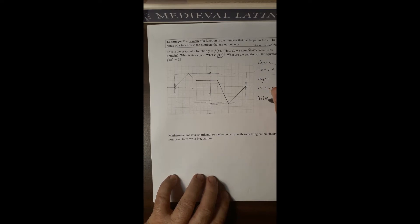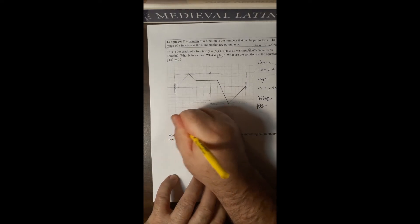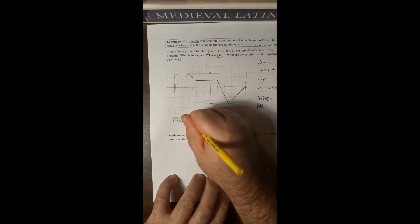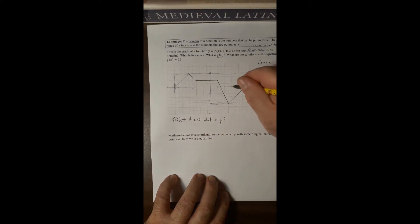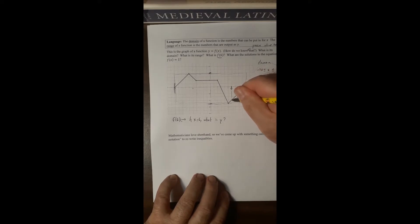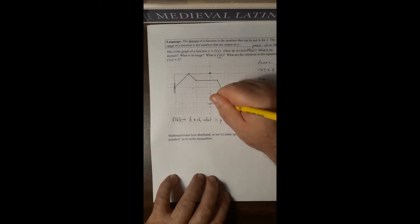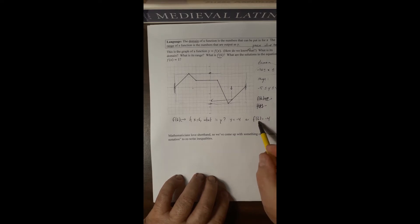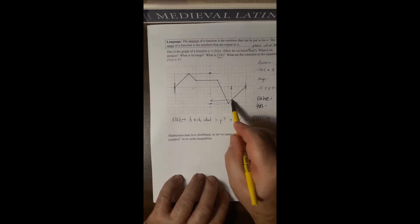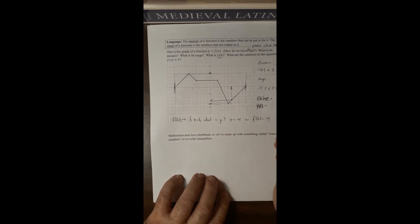What is f of 6? This question is asking: if x equals 6, what is y? You go to x equals 6 on the graph, move down to the curve to find the point, then read across to find the y coordinate. The y coordinate at that point is minus 4, so f of 6 equals minus 4.